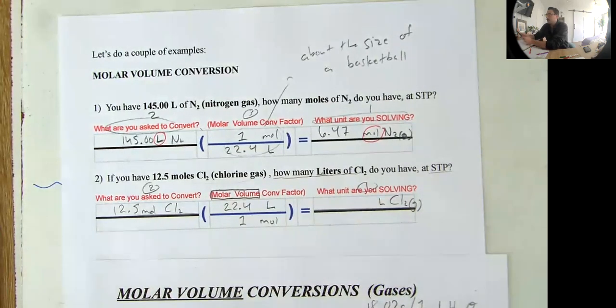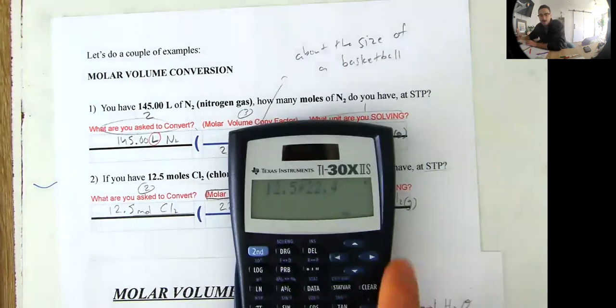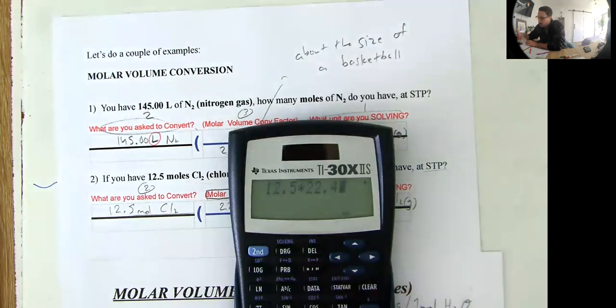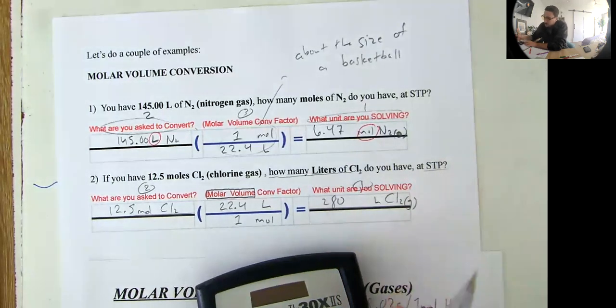I have to double check to make sure my decimals are in the right place and everything. Make sure you do the same. 22.4 equals 280. 280 liters of chlorine. And that,